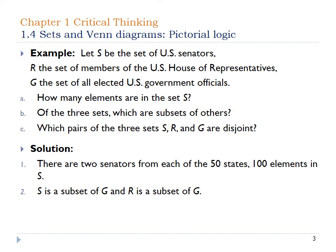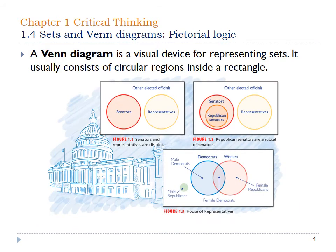If we look at which sets are disjoint, that would be the senators and the House of Representatives, because there is no senator that's also in the House of Representatives. In Figure 1-1, the senators and representatives are disjoint — totally separate pieces. In Figure 1-2, we have Republican senators that are a subset of the total senators, and the stuff outside of that would be the Democrat senators.